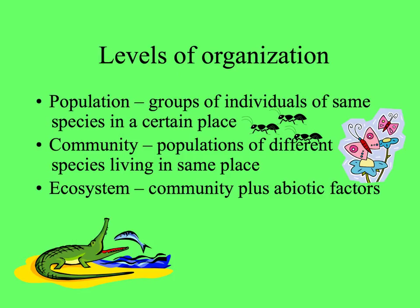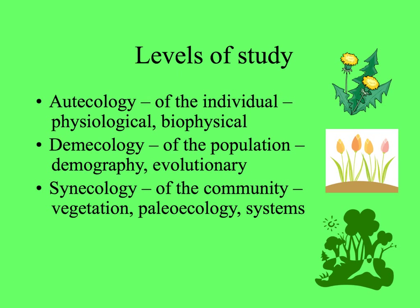In ecology, we have levels of organization, just like you learned in general biology. If we start with an individual of any species, a population is a group of those individuals that live in a certain place together. A community is populations of different species living in the same place — ants and butterflies and plants all in a certain place. An ecosystem is the community plus the abiotic factors that are present: water, soil, and other things. And ecology can be organized into different levels of study.